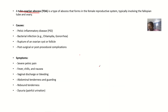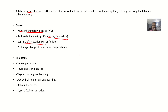Let's talk about the possible causes. It could be that there's a pelvic inflammation spreading around. There could be bacterial infection from chlamydia or gonorrhea. There could be a rupture of the ovarian cystic follicle. It could also be post-surgical or post-procedural complications — some surgery leading to complications.